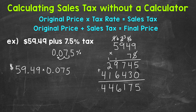So now we place our decimal. We look back at the original problem and see how many digits are to the right of a decimal. We have 1, 2, 3, 4, 5 — five digits are to the right of a decimal within our original problem. That means our answer needs 5 digits to the right of the decimal. So we count off 1, 2, 3, 4, 5. Our decimal is placed in between the 4s.